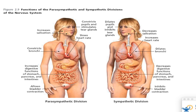Sympathetic also causes increased heart rate — the more oxygen you have, the more responsive your muscles are and the clearer your brain is to make decisions. It also dilates bronchi, meaning your lungs expand in a bigger way — you're breathing deeper and more effectively.